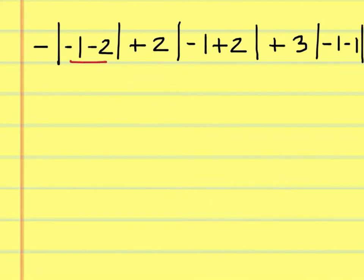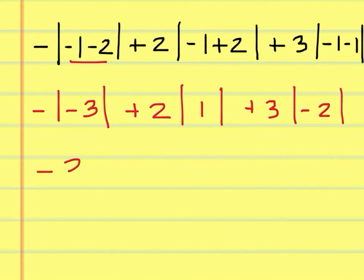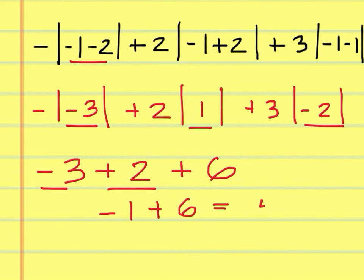We'll start in here to come up with negative 3 inside the brackets, and then in these we'll have a positive 1, and then over here we will have negative 2. So we'll have negative 3 plus 2 and then plus 6. Absolute value here is 3, 1, and 2. Negative 3 plus 2 is negative 1 plus 6 is 5.